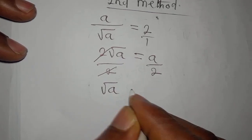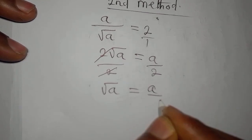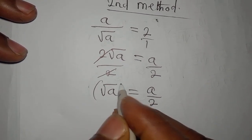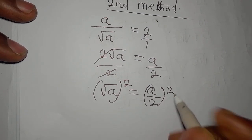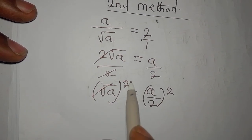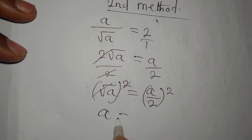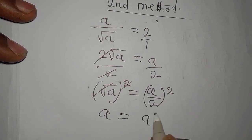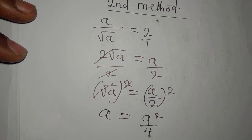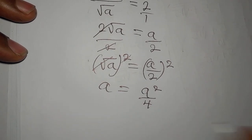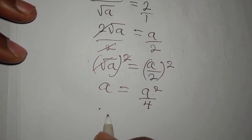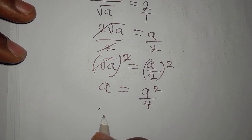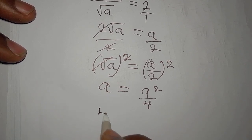So root a now is equal to a over 2. Now we need to remove the square root, so we square it and the whole of this will be squared. This will take this out. a will now be a squared over 4. Then we cross multiply to get—okay, if we cross multiply we will be having 4a.